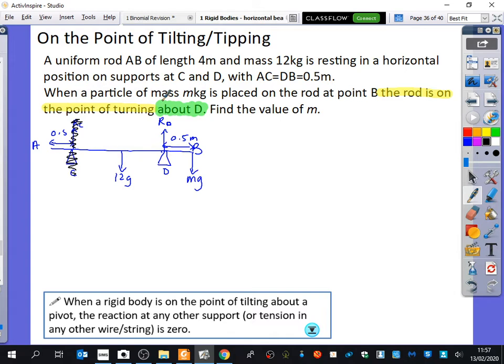It's not turning, but it's about to turn. So those normal reactions elsewhere have become zero. And that's what I've written down here. When a rigid body is on the point of tilting about a pivot, the reaction at any other support or tension, I mean, if it was a wire or a string, becomes zero. So if it's on the point of tilting, everything else is zero apart from the pivot point.